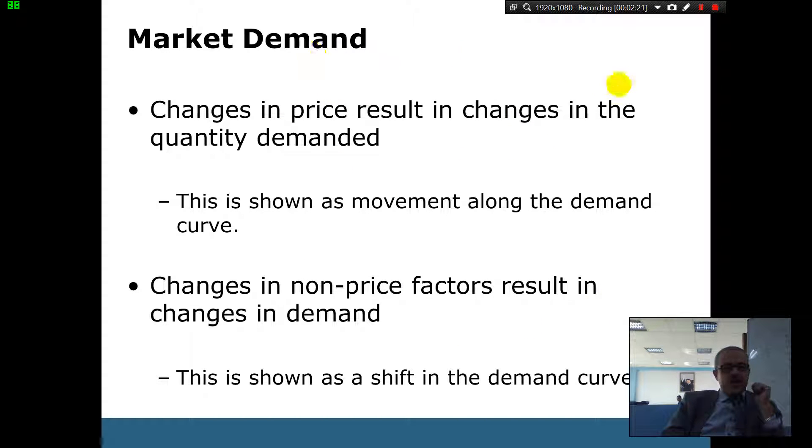Market demand changes in price results in the changing of the quantity demanded. Do you guys understand the idea of quantity demanded? It's how much people actually buy. And we have two types. We have either a movement or a shift. What's the difference between a movement and a shift? We said the movement, you're on the same demand curve. But a shift with the whole demand curve shift.